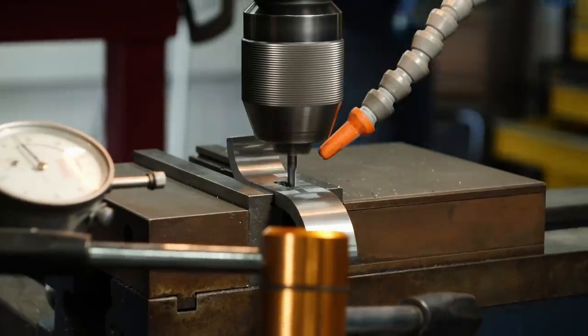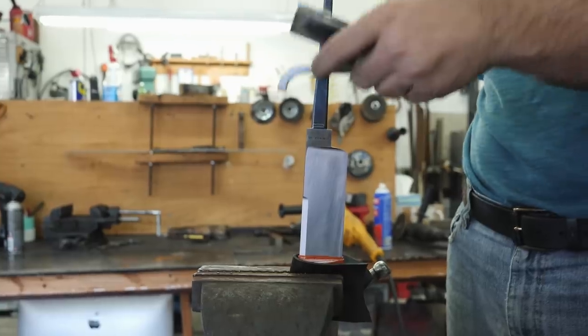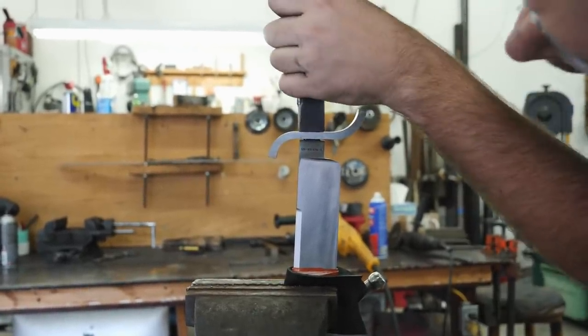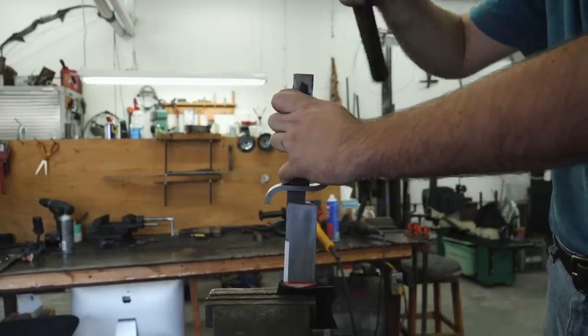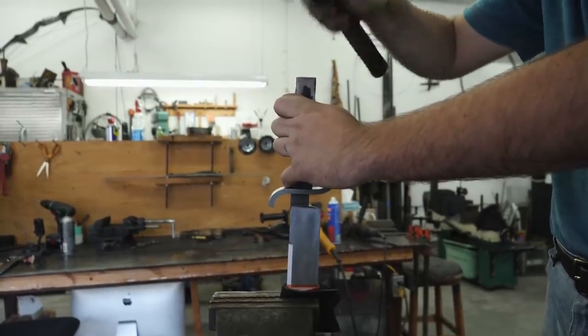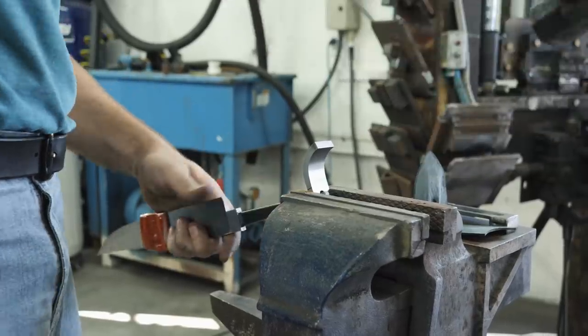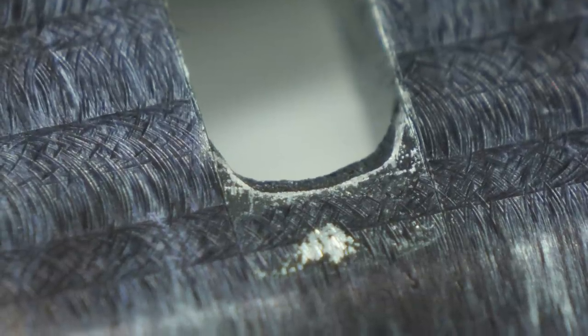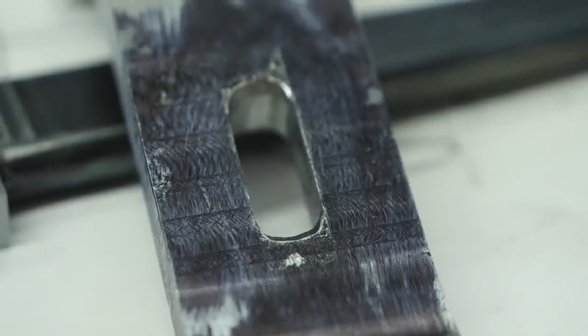Once I'm done milling the slot into the guard, I then hammer the guard onto the blade until the ricasso leaves a little bit of a mark on the face of the guard. At that point, I can start to remove metal where the ricasso hits the guard, hammer the guard on, remove more metal, hammer the guard on, remove metal until the ricasso itself is inlaid into the guard. That's how I like to get a perfect fit between my guard and ricasso.